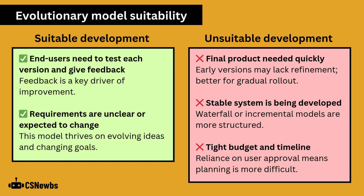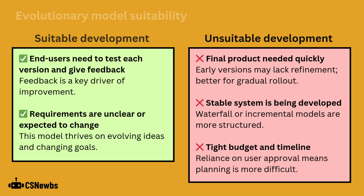However, the evolutionary model is not suitable when a final product is needed quickly, as early versions may lack refinement and it's much better suited for a gradual rollout. It's also not good when a stable system is being developed, as more rigid models like the waterfall model are better in this case. Finally, if you have a tight budget or a strict timeline, the reliance on user approval makes planning more difficult.